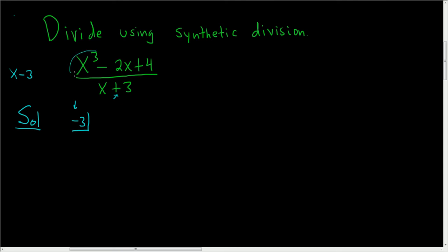Then you want to write the coefficients of whatever is here in the numerator. So we have a 1 here in front of the x cubed, so 1. Here we're missing a power of x squared, but there's really a 0x squared here. So we have to think about that and include the 0. And then we have negative 2, and the last one is 4.